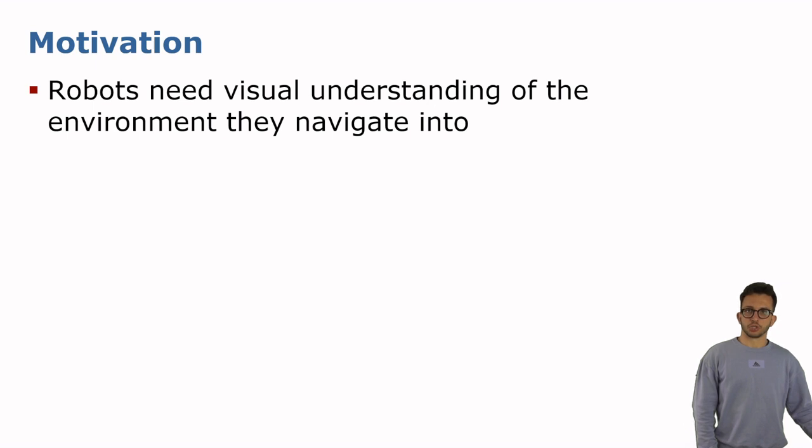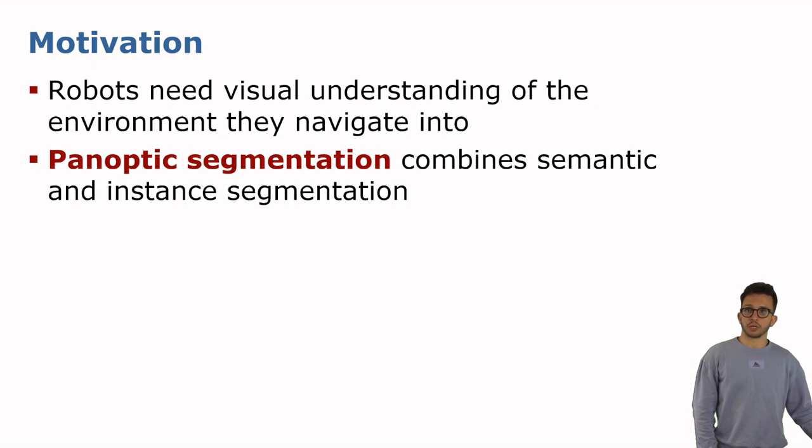Perception is crucial for autonomous systems that act in real-world environments. Robots need visual understanding of the environment they navigate into to act properly. Semantic scene perception and understanding is a key capability of a truly autonomous system and it is achieved by panoptic segmentation.